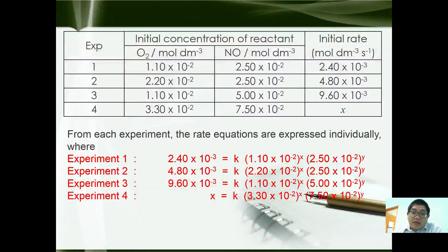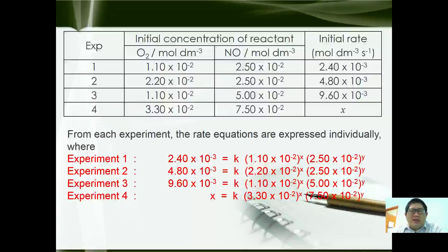Given to you in the tables here is the experiment and the concentration of O₂ and NO and also the initial rate. From each experiment, the rate equations are expressed individually. In experiment 1, we have 2.40 × 10⁻³ = k(1.10 × 10⁻²)ˣ(2.50 × 10⁻²)ʸ. Experiment 2 is substituted, so is experiment 3 and experiment 4.